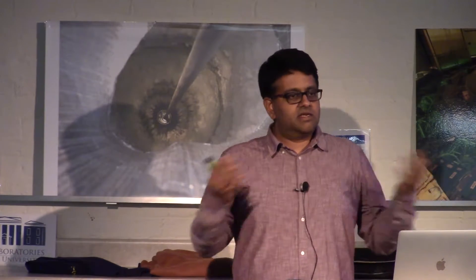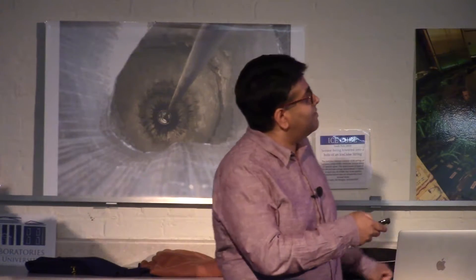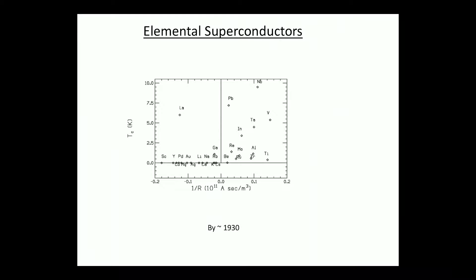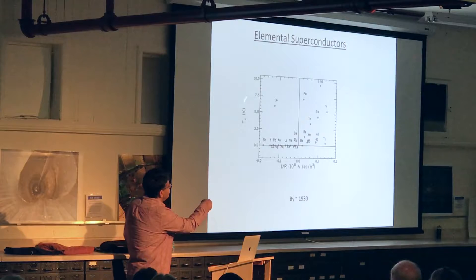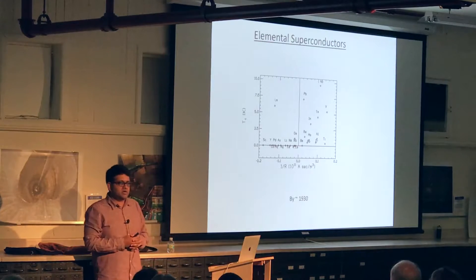So once you discover that mercury is a superconductor it doesn't take a lot of genius to say I should throw everything in liquid helium and figure out if it's a superconductor or not. And by about 1930 people had done precisely this. They had taken every material one could think of, they had thrown it in liquid helium and they had figured out which temperature if any these materials became superconducting. And forget about the x-axis on this plot, you are looking at the y-axis which tells you what temperature these materials become superconducting.